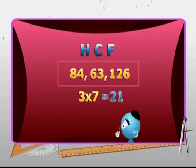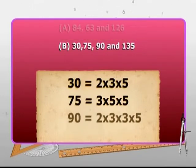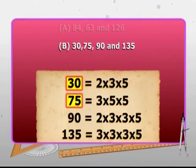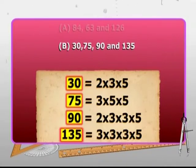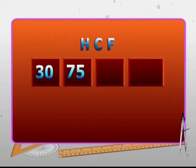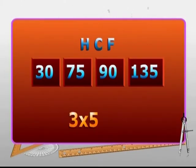Let's solve part B of the problem. First, find the factors of 30, 75, 90 and 135. Factors of 30 are 2, 3 and 5. Factors of 75 are 3, 5 and 5. Factors of 90 are 2, 3, 3 and 5. Factors of 135 are 3, 3, 3 and 5. Thus, the HCF of 30, 75, 90 and 135 is 3 multiplied by 5, which is 15.